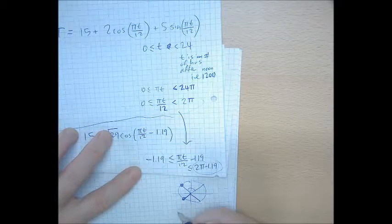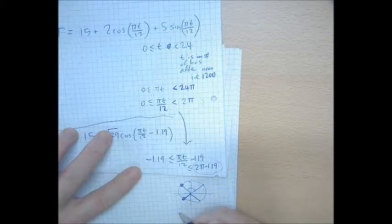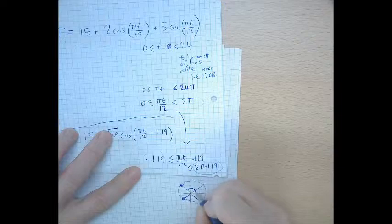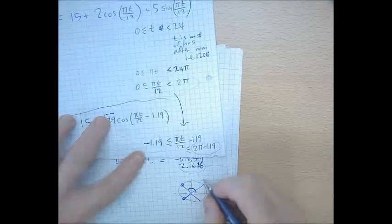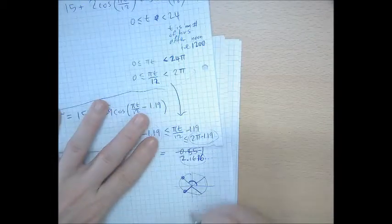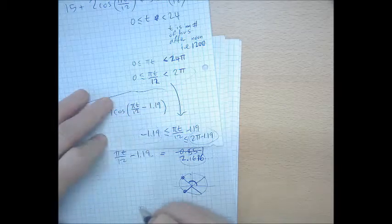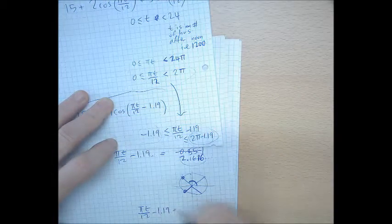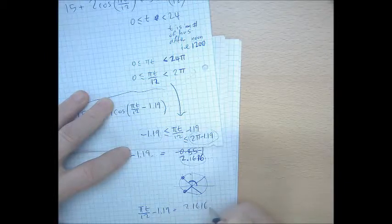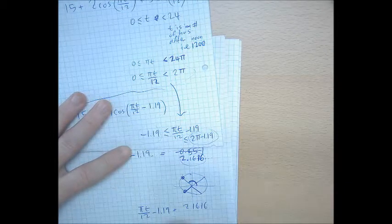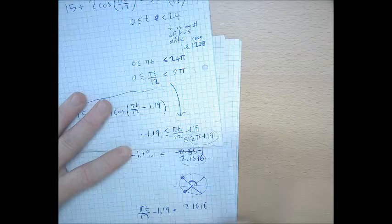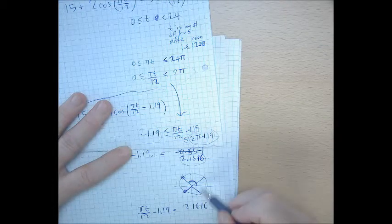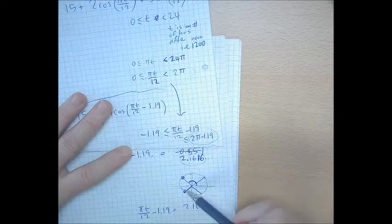What's that again? It was 2.16. So my two answers are: πt/12 minus 1.19 equals 2.16 etc., but the other one is πt/12 minus 1.19 equals... what would that guy be?